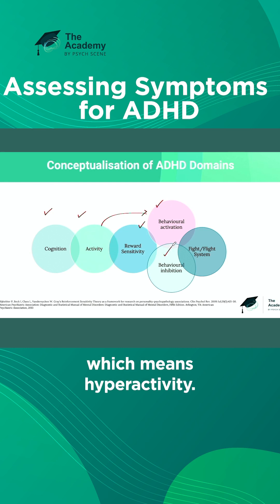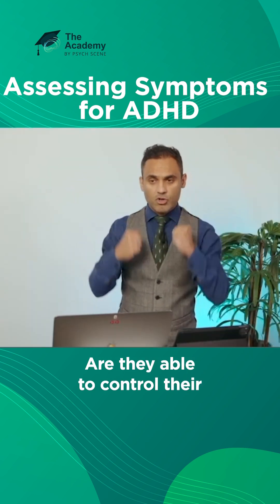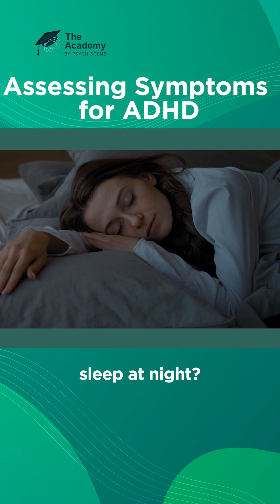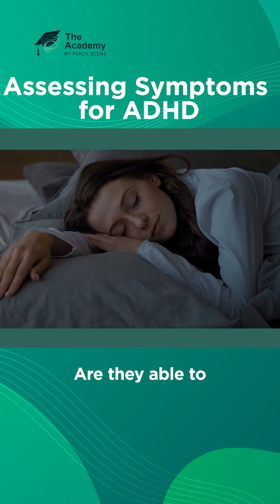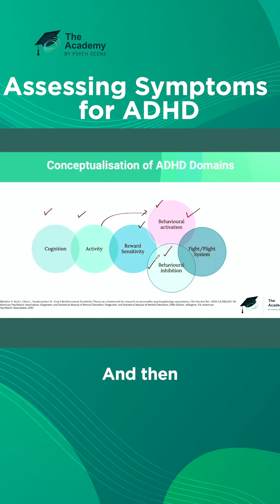Behavioral inhibition means hyperactivity — are they able to control their hyperarousal? Are they able to sleep at night? Are they able to calm their mind down, for example?